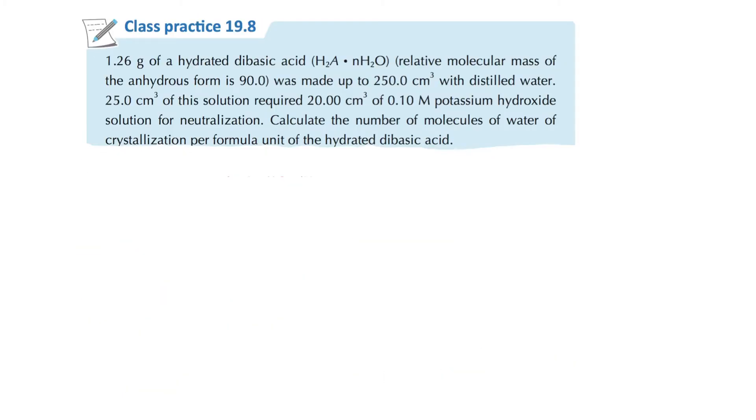Just give you one more example. So right here, we have H₂A and nH₂O. And this one was made up 250 and then 25 of it. This one is a little bit more difficult than the one before. So this one is 1.26. We'll first prepare 250 and then we'll get 25 out of it. And they're going to react with potassium hydroxide, which is KOH. So this one has dibasic, so therefore we know that the ratio will be 1 to 2.